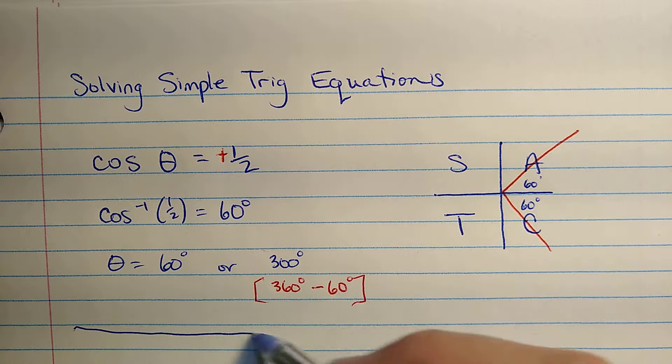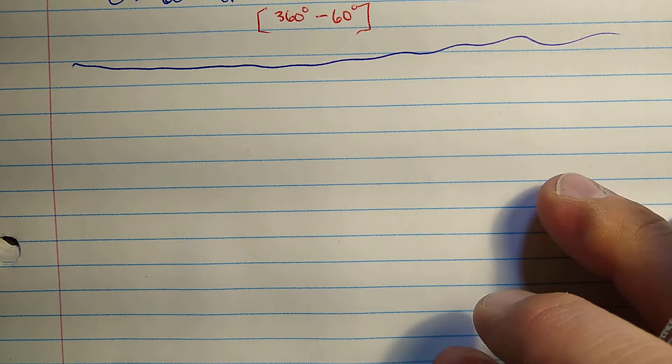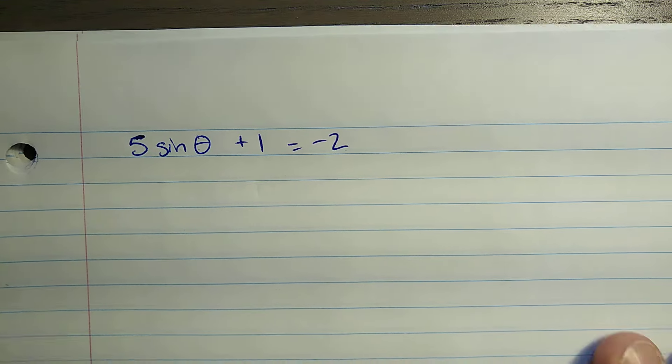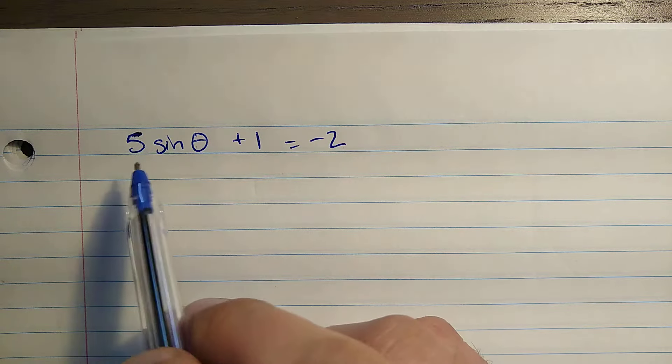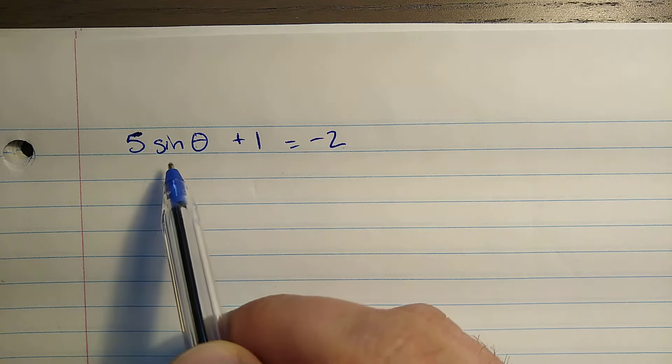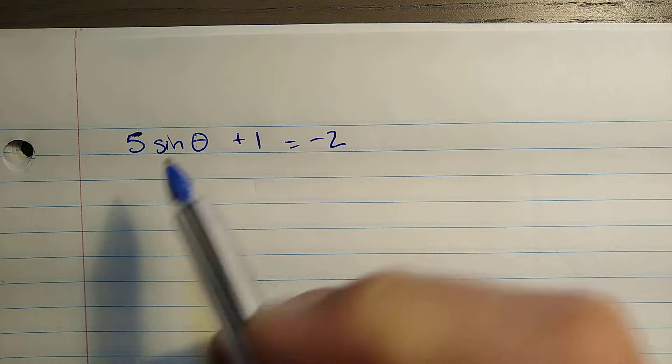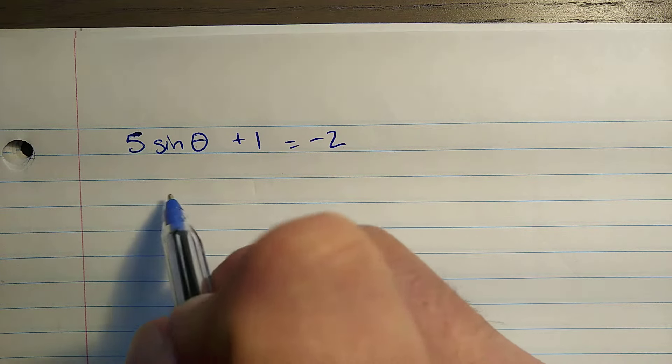All right, let's do one that's a little more complicated. Fresh page. How about this one? Five times the sine of theta plus one equals negative two. Now this one's only more complicated because it has some extra terms in it. Notice we still have just sine theta here. That's pretty doable. Let's work on this.